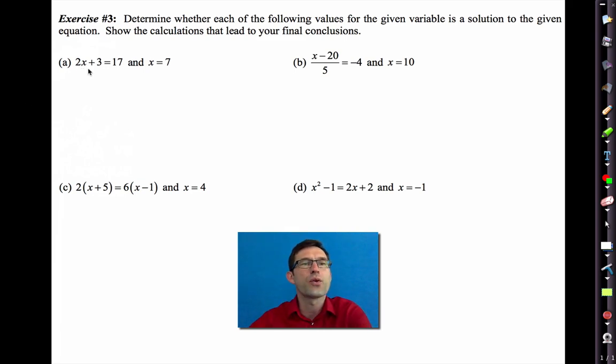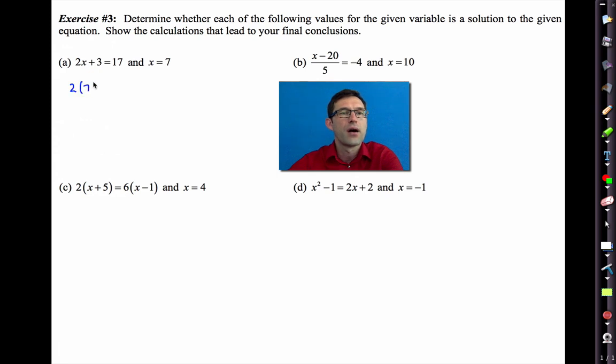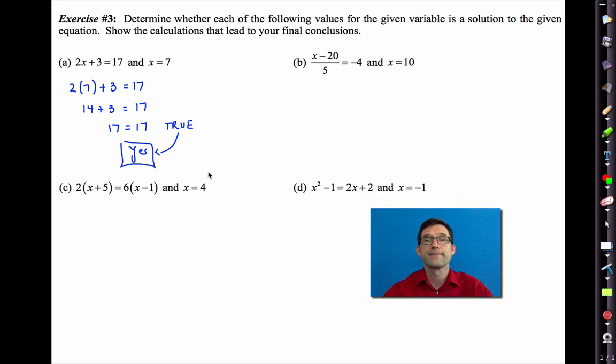Let's see if 7 is a solution to the equation 2x plus 3 equals 17. So I'm going to see if it makes this equation true. 2 times 7 is 14. 14 plus 3 is 17. This is true. So yes. And by the way, the answer is yes. The answer is not true. True tells us the answer is yes. Let's see if 10 is a solution to this equation. I'm going to get 10 minus 20 divided by 5. And I want to see if this expression is now equal to negative 4. Well, 10 minus 20 is negative 10. Negative 10 divided by 5 is negative 2. Is negative 2 equal to negative 4? No. That's false. That tells us the answer is no.